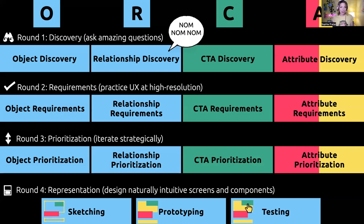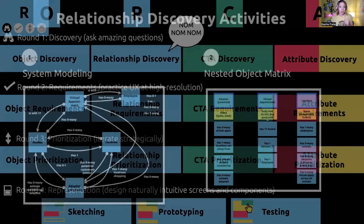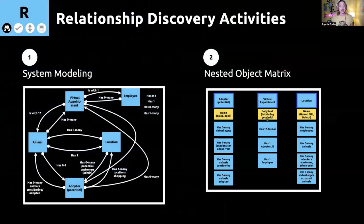We're just going to be talking about the NOM — the Nested Object Matrix — which lives in the second step, traditionally, of relationship discovery. Relationship discovery has two main activities: system modeling, which is all our boxes and arrows — you might know this as an entity relationship diagram or a content model, where you have things and how all the things are connected.